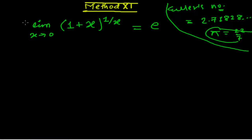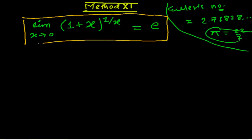So this is the formula I want to tell you today: limit x tends to 0, (1 + x) whole to the power 1/x, equals e, or Euler's number. Related to this standard form, we have to learn and solve a lot of problems.